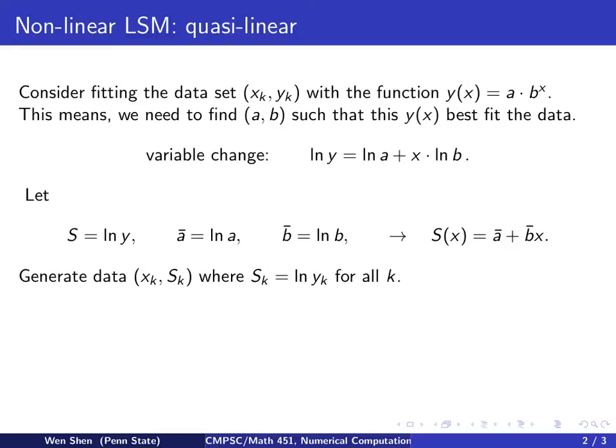So now we have a new problem. Starting from the data (xk, yk), I can generate the data (xk, Sk) where the Sk's are simply equal to natural log of yk for all k. And for this data set here, I will do the linear regression. So this we already know how to do. We know it's a linear least square method, and we can apply what we have learned about linear methods to solve, and we would find the coefficients ā and b̄.